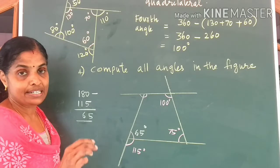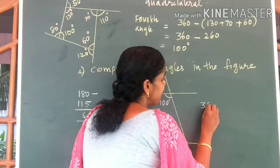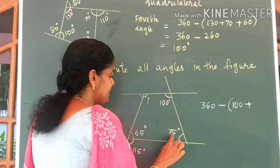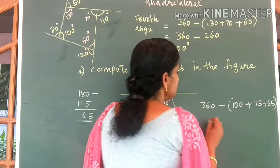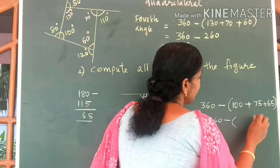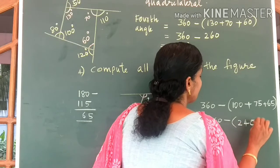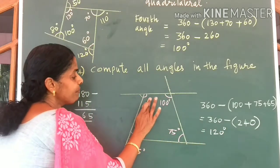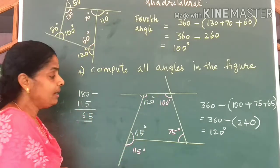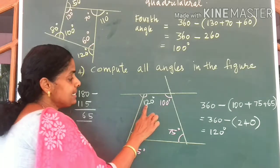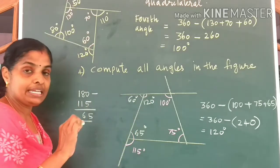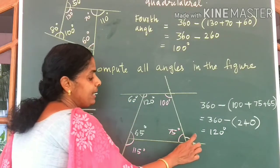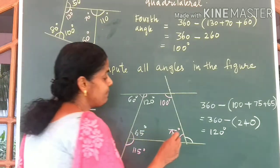Now we know three angles of the quadrilateral. Let us write the fourth angle. From 360 degrees, we subtract the sum of these three angles: 100 plus 75 plus 65, which gives 240. So the fourth angle is equal to 120 degrees. Now, the outer angle at this vertex is 180 minus 120, which is equal to 60 degrees. The outer angle at this vertex — since the inner angle is 75 — is 180 minus 75, which is equal to 105 degrees.